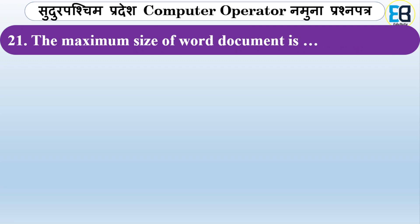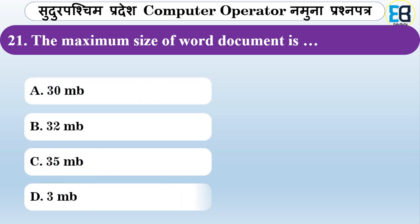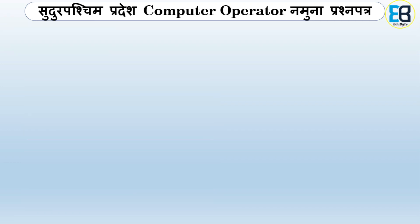What is the maximum size of a Word document? Options are 40 MB, 32 MB, 35 MB, or 3 MB. The correct answer is 32 MB — that is the maximum size of a Word document.